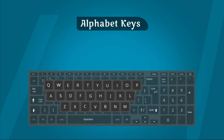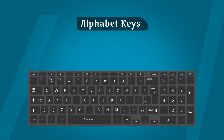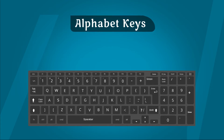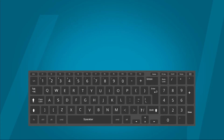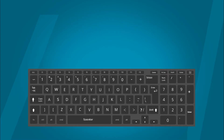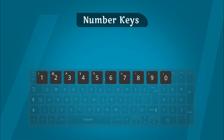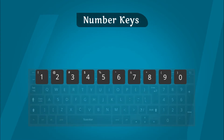यह keys keyboard के middle में होती हैं। इसका use words को टाइप करने में किया जाता है। Number keys: Keyboard की keys पर 0 से 9 तक numbers होते हैं, जिसका use number टाइप करने के लिए किया जाता है।